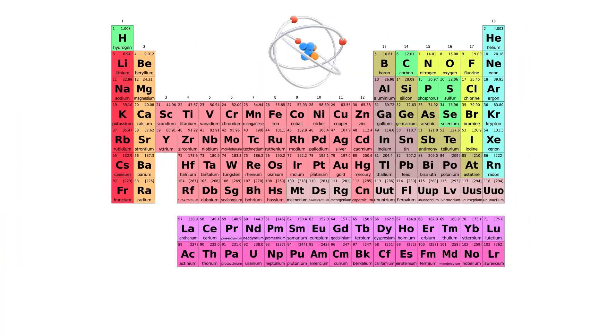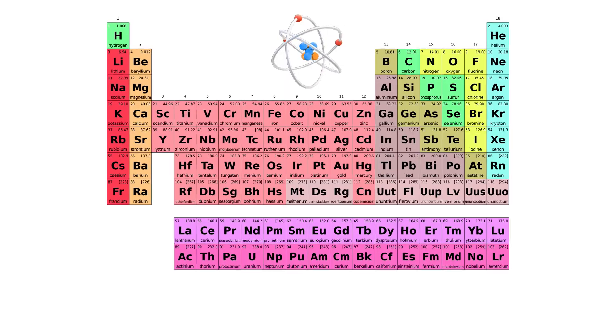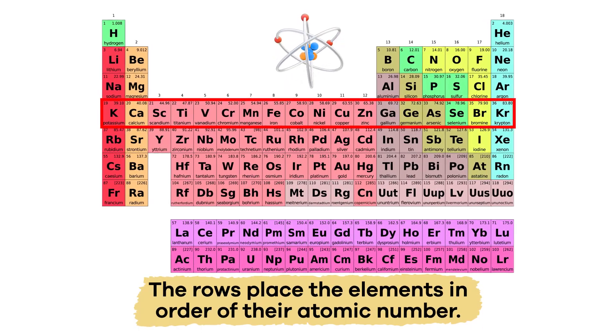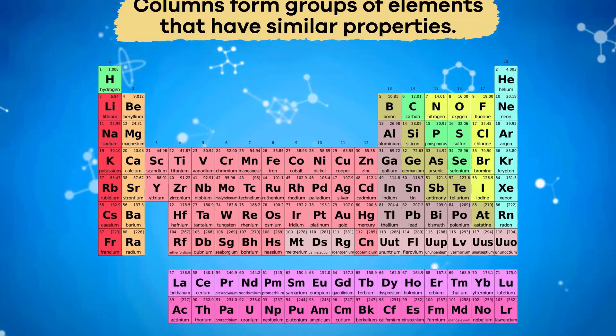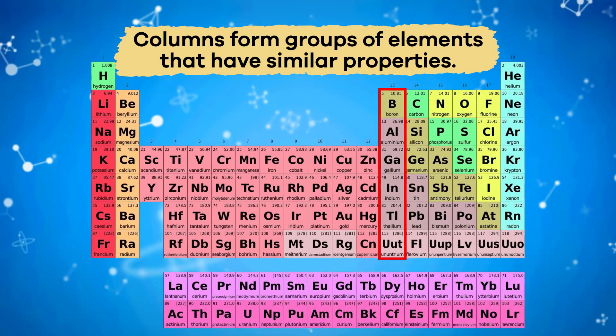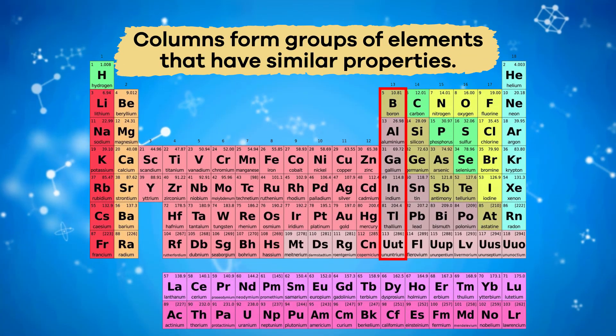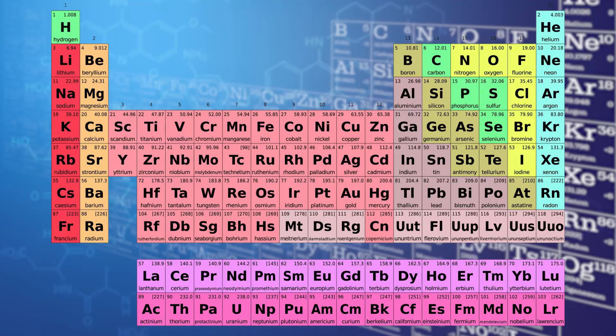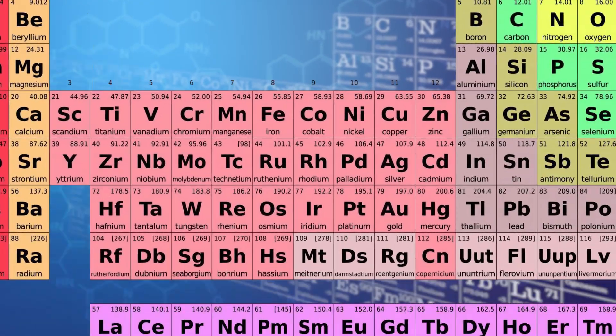The elements are arranged in rows and columns. The rows place the elements in order of their atomic number, and the columns form groups of elements that have similar properties. You read the periodic table from top left to bottom right.